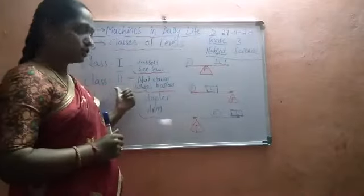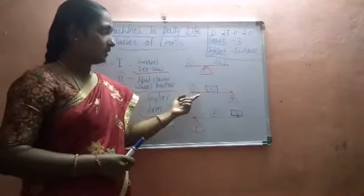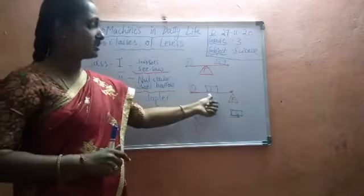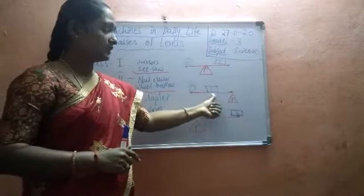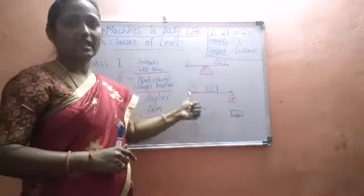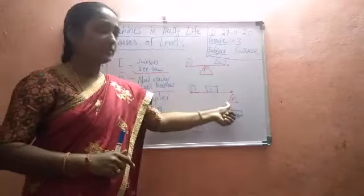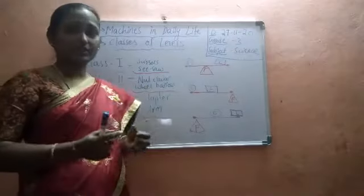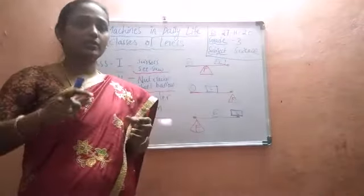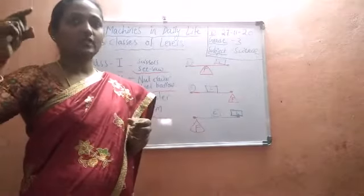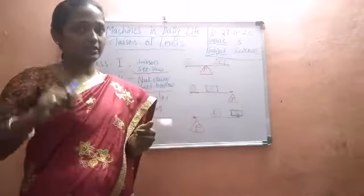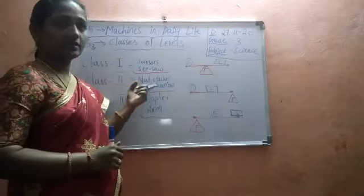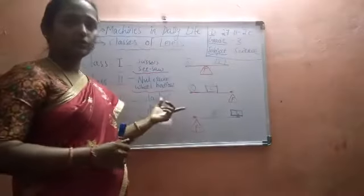In class 2 levers, the fulcrum is at one end and the load is in the center. When the three parts are arranged differently, the classification changes. Examples of class 2 levers are nutcracker and wheelbarrow, where the load is in the center and the effort is at the other end.